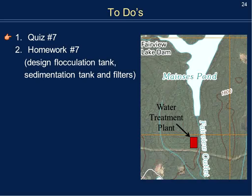Your to-do's: please complete quiz number seven before the due date, and move on to homework number seven. Homework six asked you to design the rapid mixer; now homework seven asks you to design the flocculation tank, sedimentation tank, and filters — assuming the water treatment plant will be located at the Fairview outlet. Good luck with the homework.